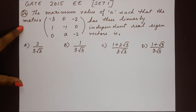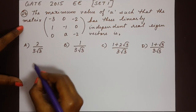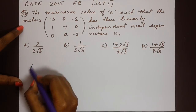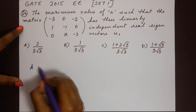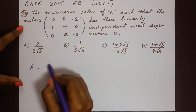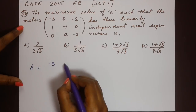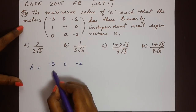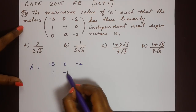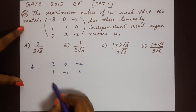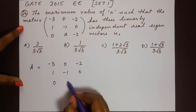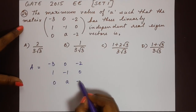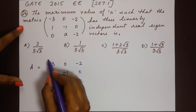Let's start with the matrix given to us — we'll call that A. A is equal to the three by three matrix: minus three, zero, minus two in the first row; one, minus one, zero in the second row; and zero, A, minus two in the third row.